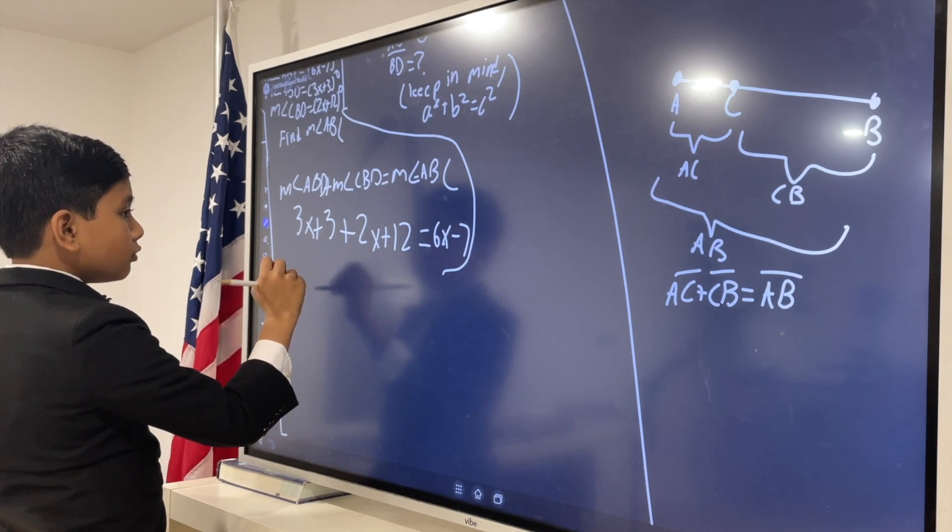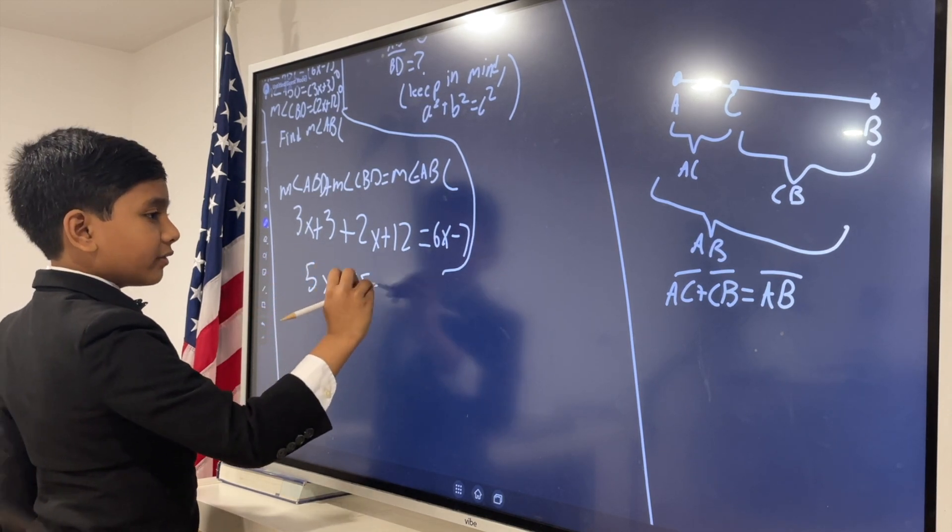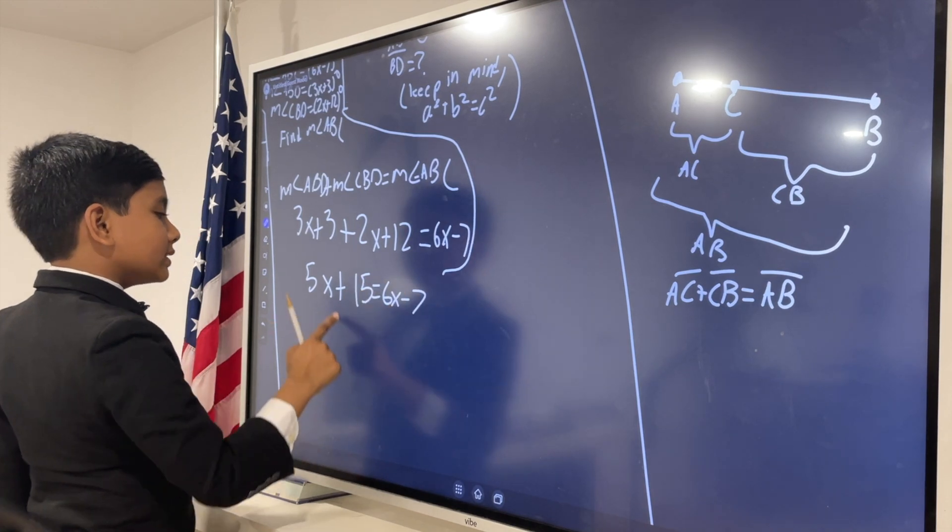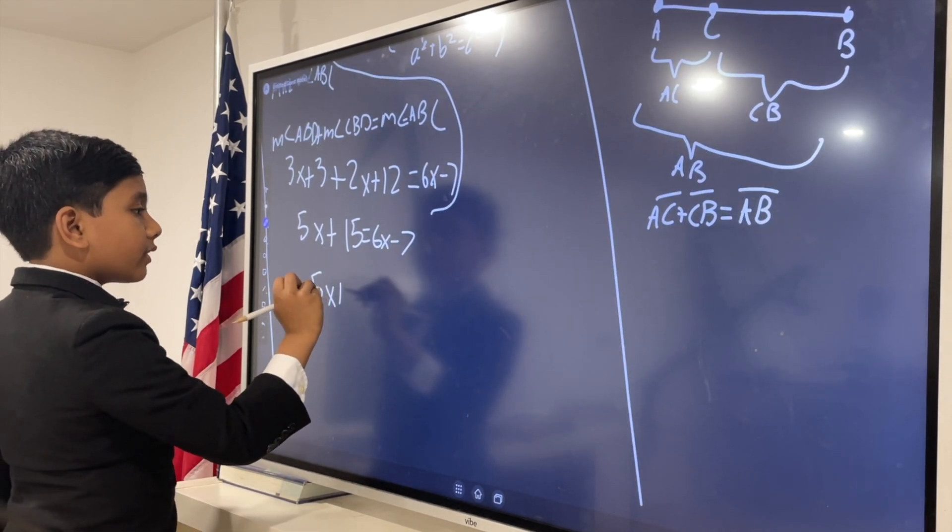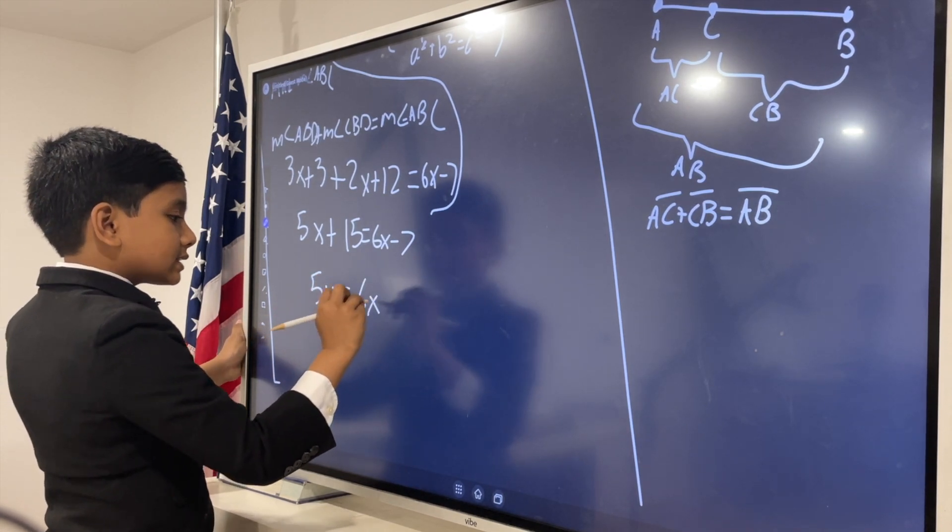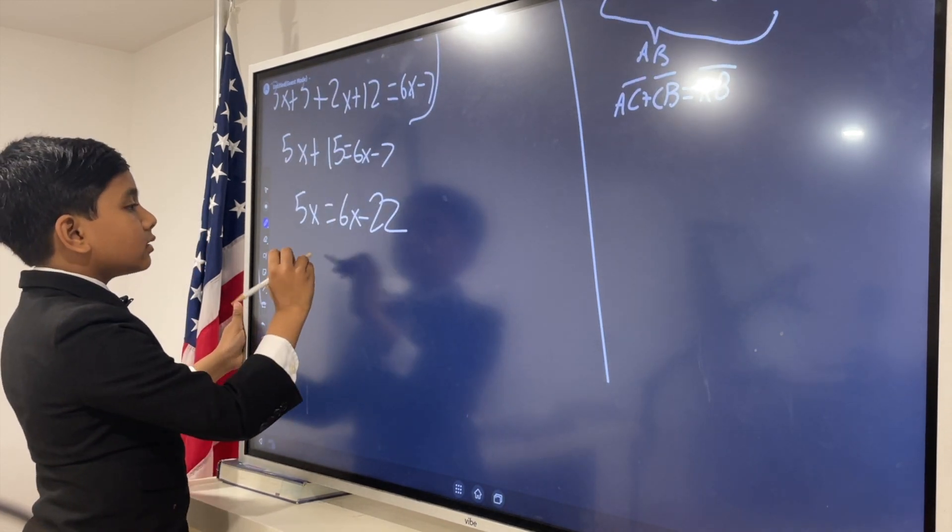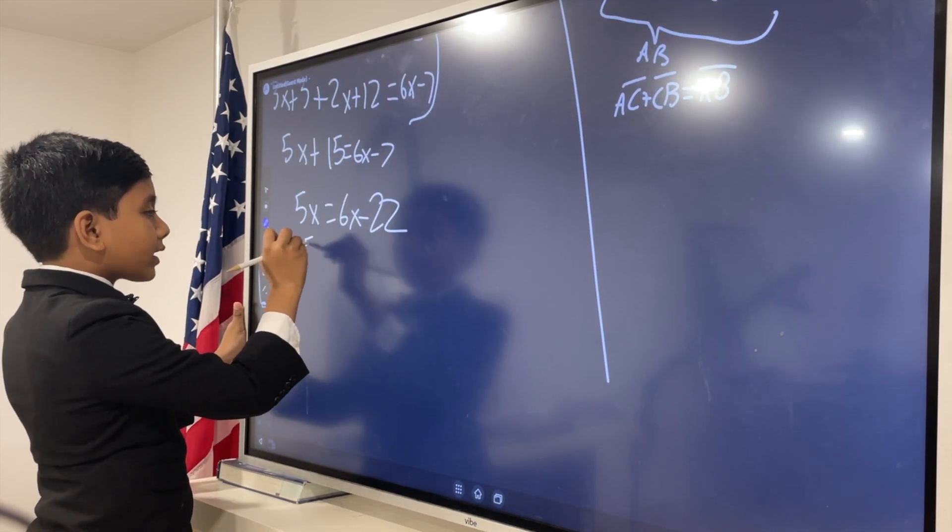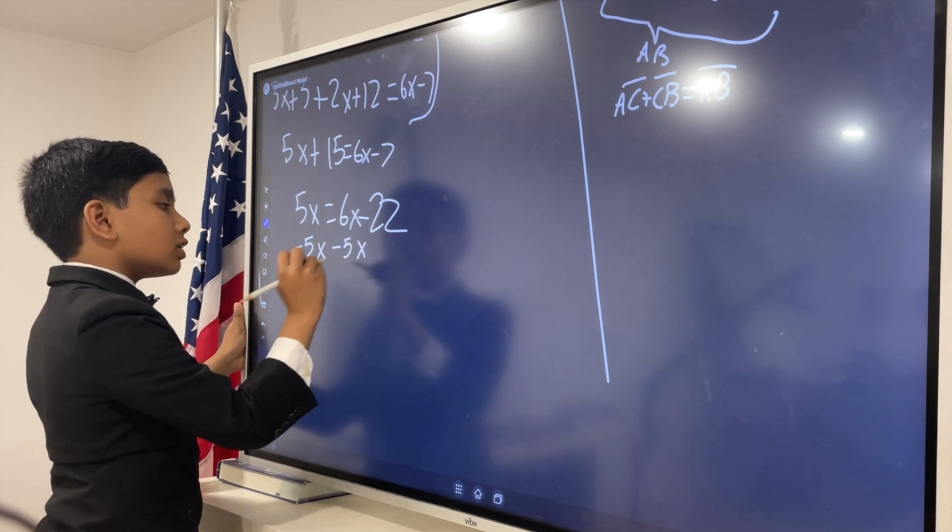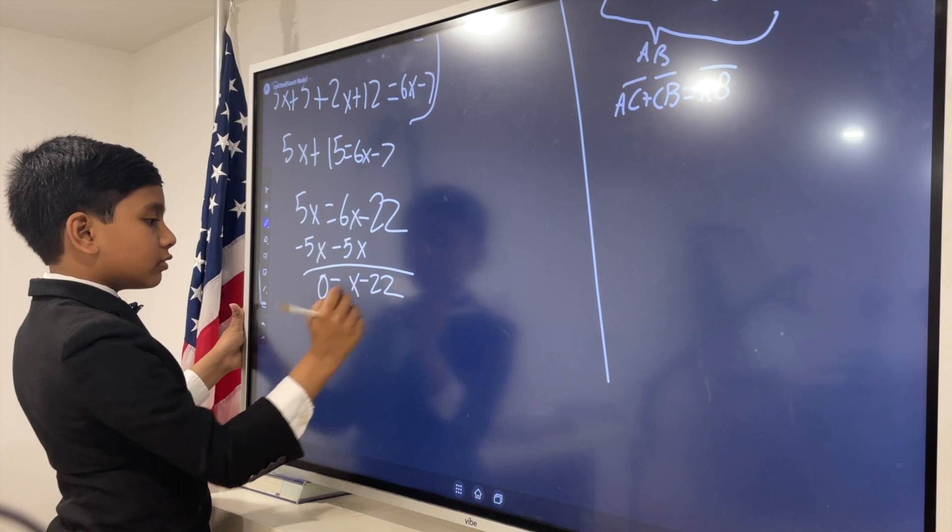So, 3x and 2x make 5x. 3 plus 12 makes 15. So 5x plus 15 equals 6x minus 7. Now, we subtract 15 from this side: 6x minus 7 minus 15 equals 6x minus 22. And then, we subtract 5x from both sides, which gives us 0 equals x minus 22.